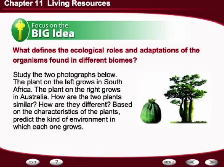The trees to the right don't look as adapted to store water — they look adapted to use a lot of sunshine. That tells us the ecosystem those trees are from probably has an abundant amount of rain and sunshine for those leaves to use. This unit's big idea is: what defines the ecological roles and adaptations of organisms found in different biomes? What we want to understand by the end of this unit is what is the driving force that causes organisms to adapt and change to better fit their environment.